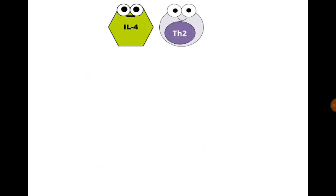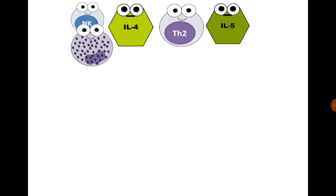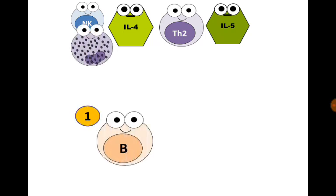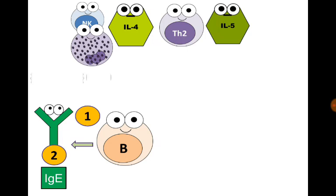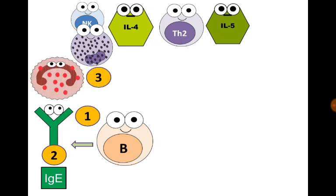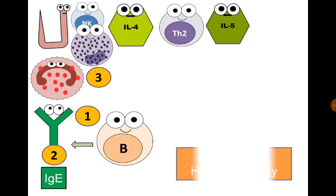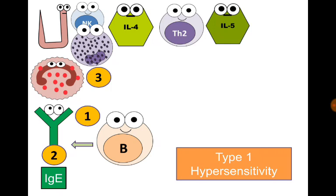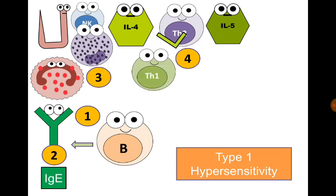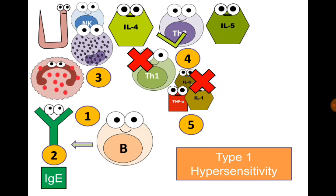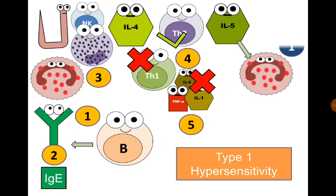For T helper 2 cells, the two important cytokines are interleukin-4 and interleukin-5. Interleukin-4 is the most important and the hallmark of T helper 2 cells; natural killer cells and basophils can also secrete it. Interleukin-4 promotes humoral immunity, activates B lymphocytes to produce antibodies, stimulates class switching to IgE secretion, activates eosinophils in response to helminths, mediates allergy — specifically type 1 hypersensitivity reaction — promotes T helper 2 response, and inhibits T helper 1 response. Interleukin-5 mainly activates eosinophils and mediates allergic reactions.